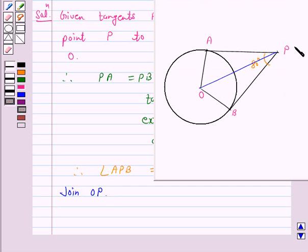A tangent at any point to a circle is perpendicular to the radius to the point of contact. So angle OAP is 90 degrees and angle OBP is also equal to 90 degrees.